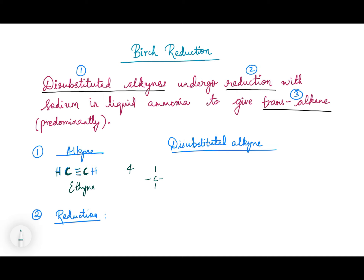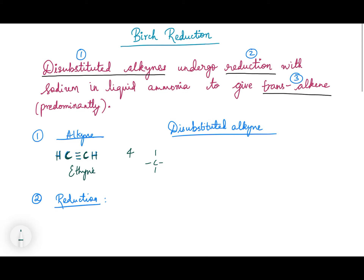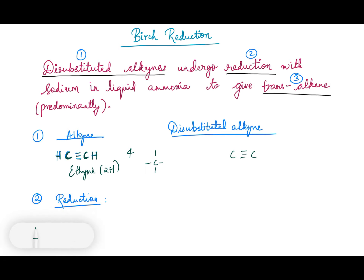Ethyne has two hydrogens. Now if these two hydrogens are substituted by some other group, it is known as a disubstituted alkyne. Instead of hydrogen, if some other group is present on both carbons, we call it disubstituted. For example, I'll put a methyl group on each carbon — this is a disubstituted alkyne.